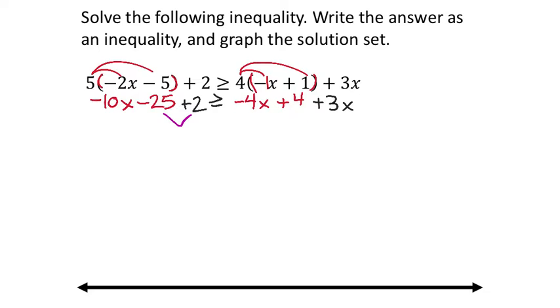And right here I see I can combine these constants, right? Negative 25 plus 2, which would be negative 23. On the left side, that's all I can do, so I'll drop the negative 10x. And then on the right side, I've got negative 4x's plus 3x's, which I'm going to show is negative 1x's. And then we still got that plus 4 there. So this is my new equation.